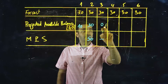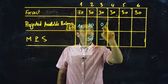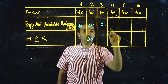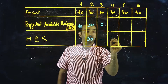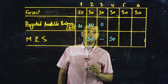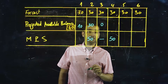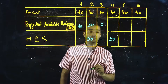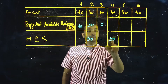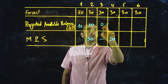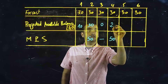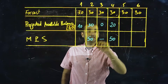This value cannot cover the next period, so we need to schedule an MPS receipt for the fourth period. 50 plus zero minus 30, and the result will be 20.